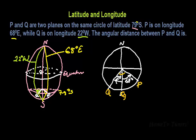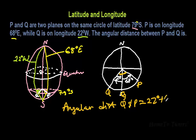So the angular difference, or the angular distance, that is what it means. The angular distance of Q and P is equal to the addition of the two degrees: 22 plus 68. And that gives us 90 degrees.